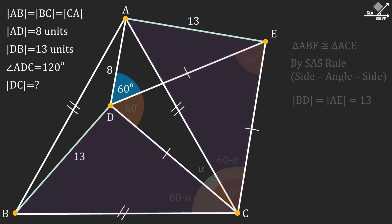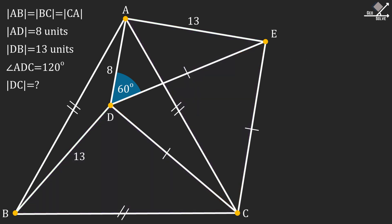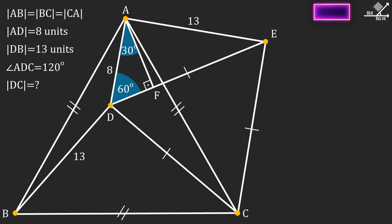Now let's clean the figure for the next steps. Now let's draw a perpendicular line from point A to line segment DE. So we have a nice little 30-60-90 special triangle. From here, we can find that DF equals 4 units and AF equals 4 times square root of 3.